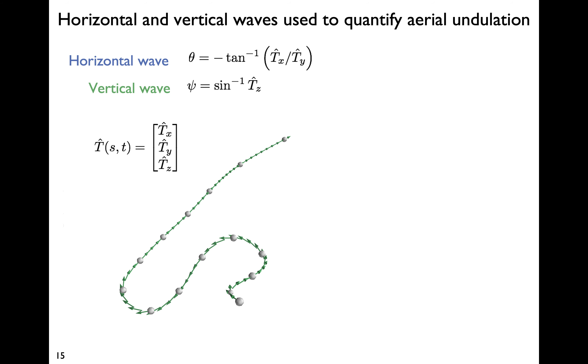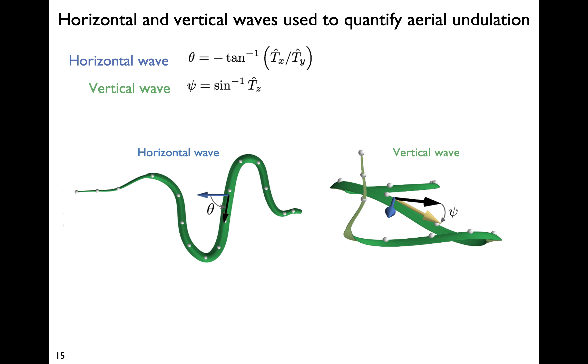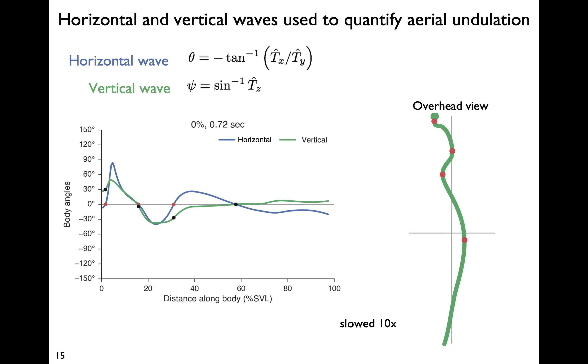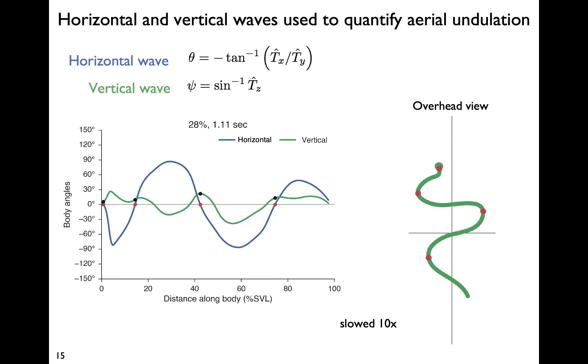To characterize aerial undulation, we can use the tangent vector from before, and how this changes along the body to define two waves of bending. A lateral wave, seen in an overhead view, and a vertical wave, seen from behind. After an initial transient, we see that the flying snake uses these two coupled waves of bending. A large amplitude lateral wave, in blue, and a smaller amplitude vertical wave, in green.